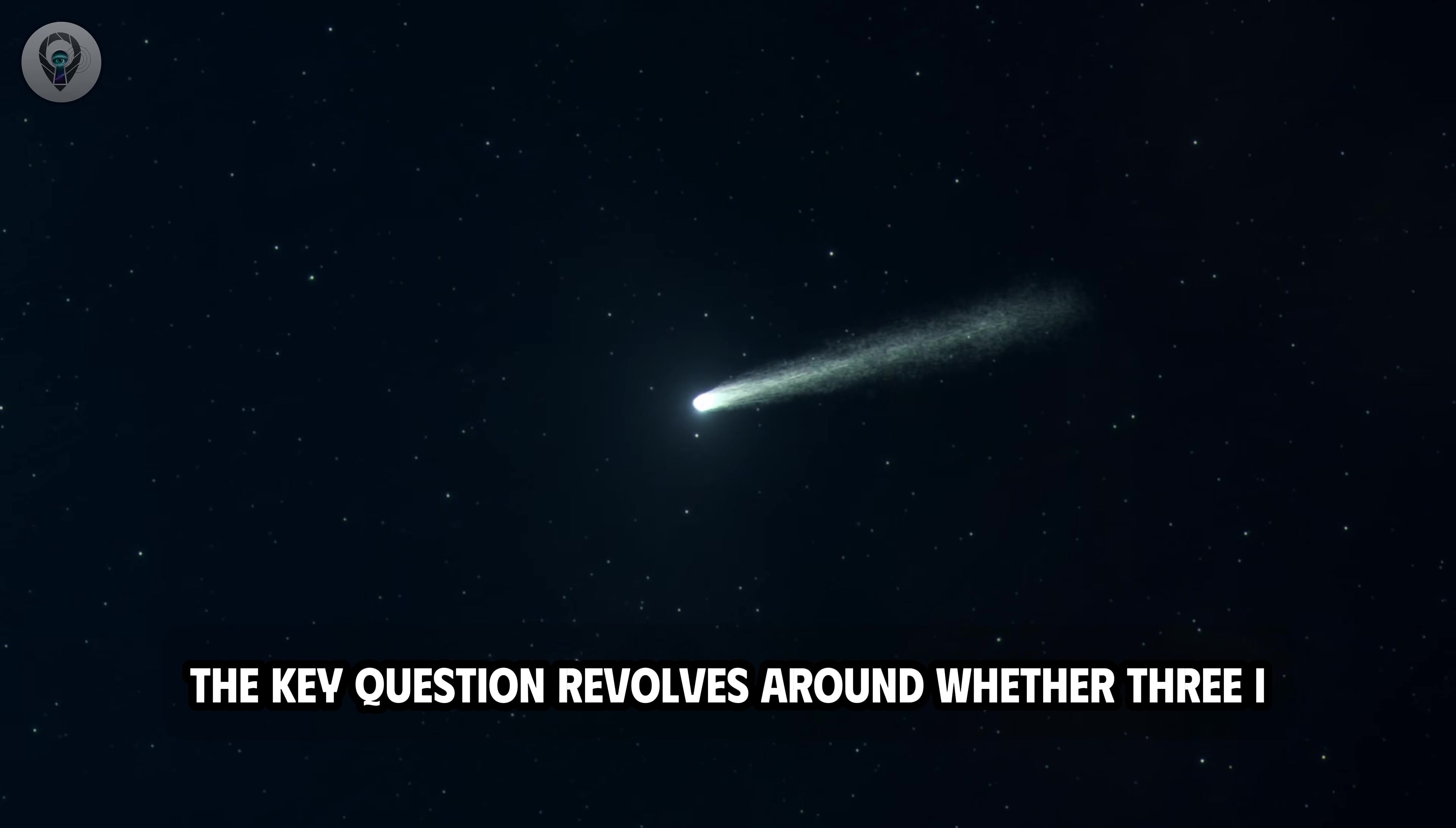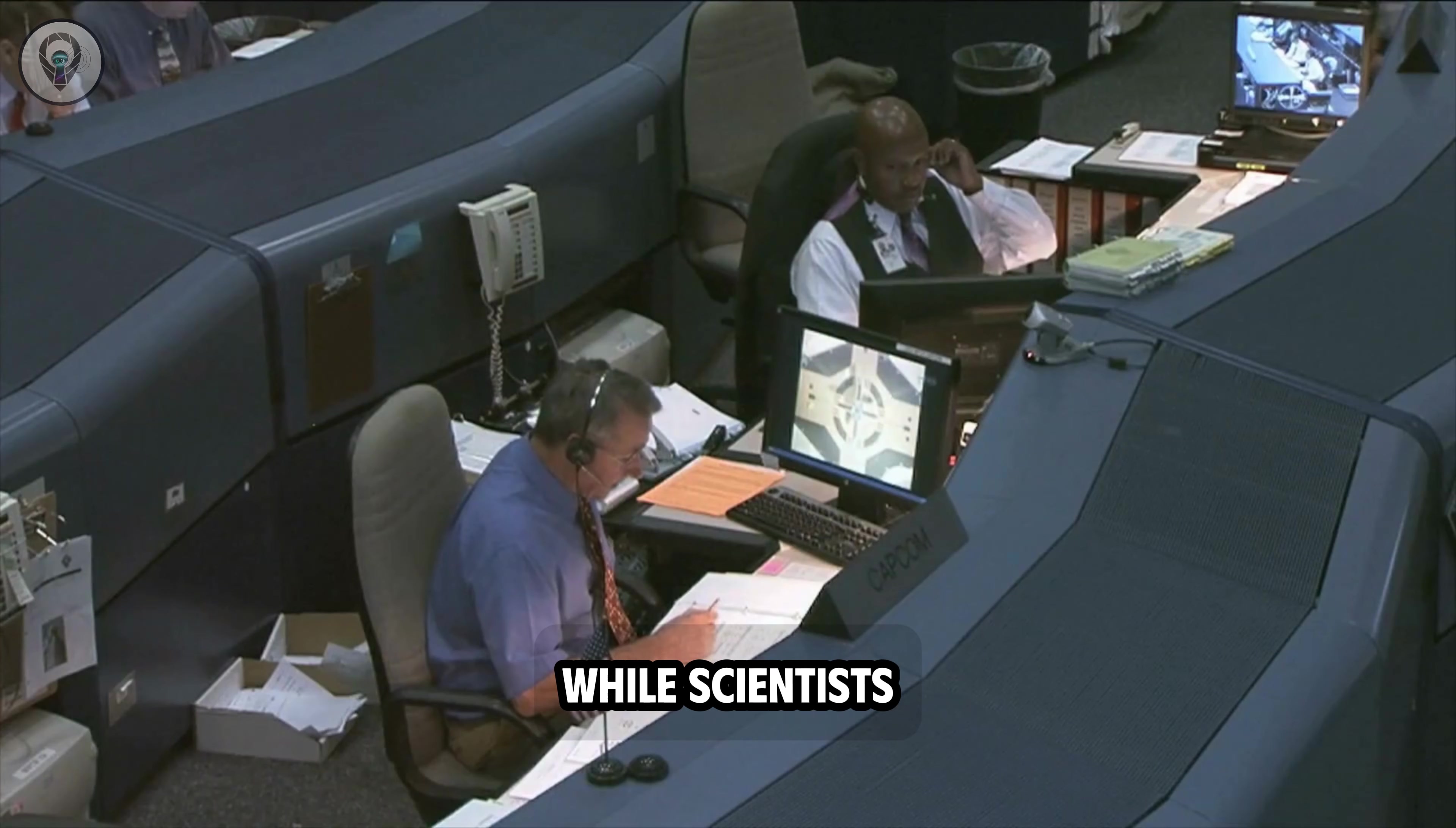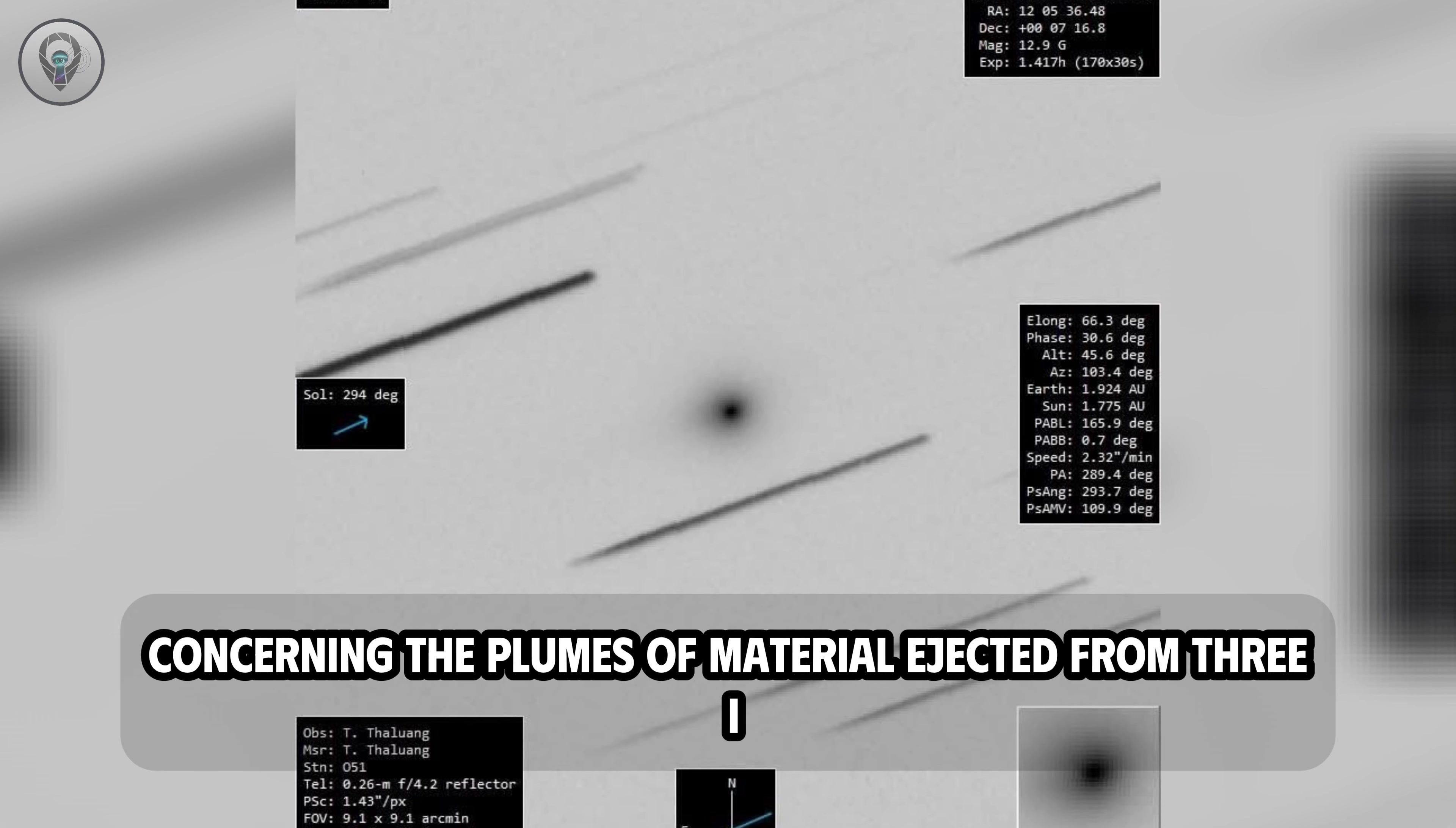The key question revolves around whether 3i Atlas is actually a regular comet or a completely different type of object, with a nature never before recorded. Despite the reported unusual phenomena, NASA's official stance remains that 3i Atlas is a comet. However, the agency's communication methods have become a subject of debate. Recent press conferences have been primarily chaired by administrative officials, while scientists directly analyzing data from large telescopes like Webb or Hubble have been absent. This has led to the information released being perceived as lacking in scientific depth and failing to fully reflect the latest observational data. Notably, alongside official images from NASA, numerous amateur astronomers have provided more detailed observations, particularly concerning the plumes of material ejected from 3i Atlas.